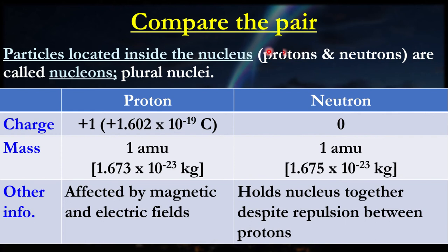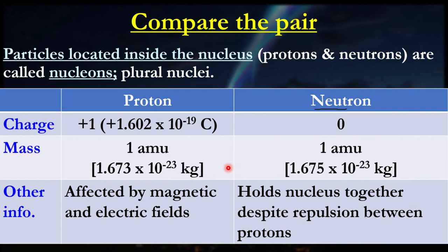Just to give you a bit of context when we compare the pair — the proton and the neutron. The proton has a plus one charge, the exact same charge magnitude as the electron but opposite polarity — it's positive. The neutron has a neutral charge, as indicated by its name. Their masses are relatively similar; the neutron is just slightly more heavy, but virtually much the same.